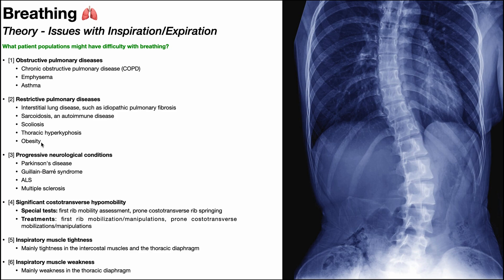The same thing goes for obesity. Imagine somebody in the supine position lying on their back with a lot of central adiposity. When you inhale, the rib cage has to expand — in the supine position it essentially moves up toward the ceiling. If you've got a lot of body fat covering that, it's going to make it more difficult for the ribs to move up because the fat is essentially weighing the ribs down. So obesity makes inhalation more difficult and would be classified as a restrictive pulmonary disease when it contributes to difficulty breathing.